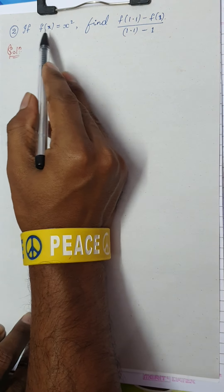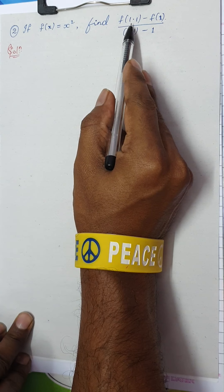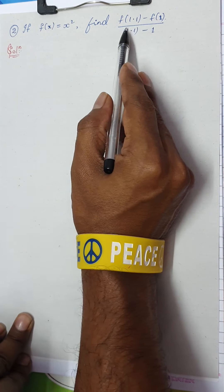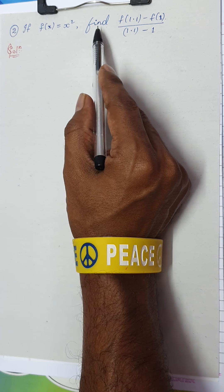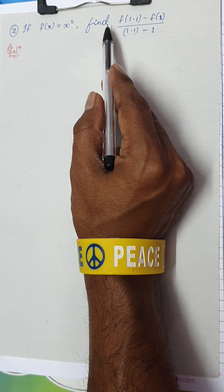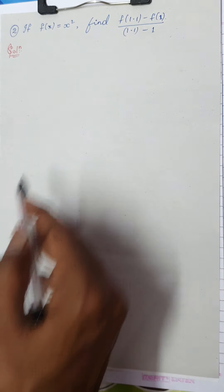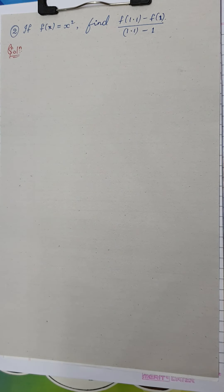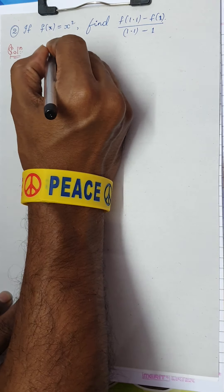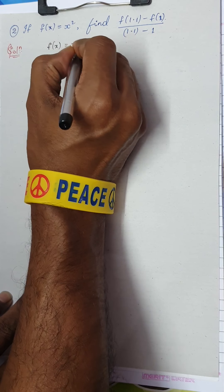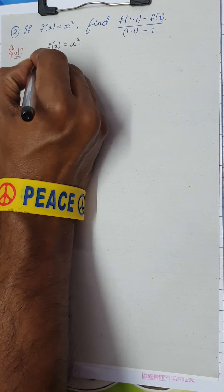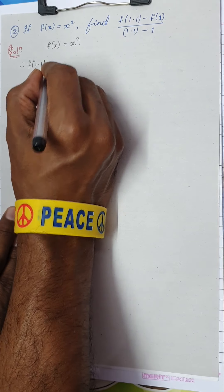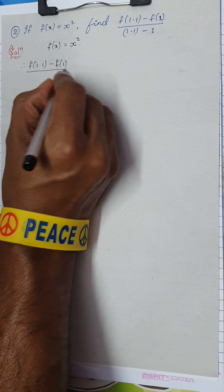Question number 2: if f(x) = x², find [f(1.1) − f(1)] / (1.1 − 1). Please note this question is very important for CET — it has been asked two or more times in your examination — and it is also asked in the First PUC main examination.